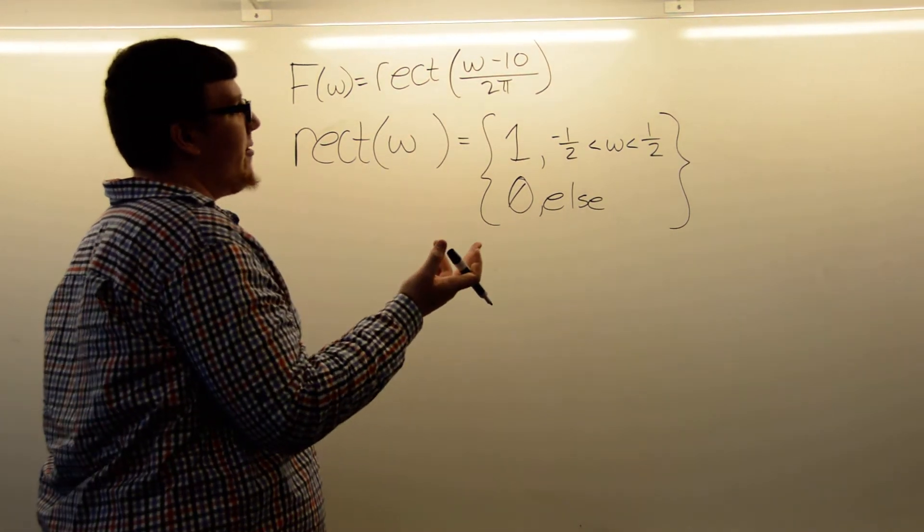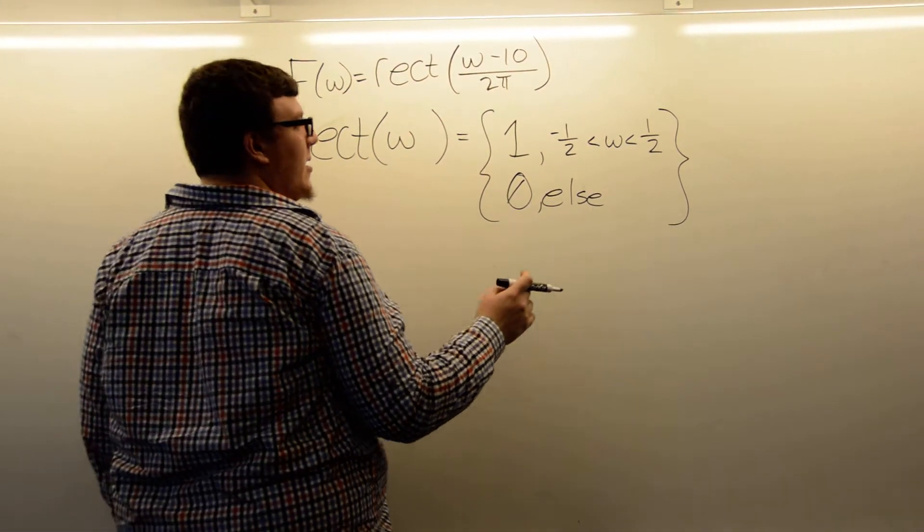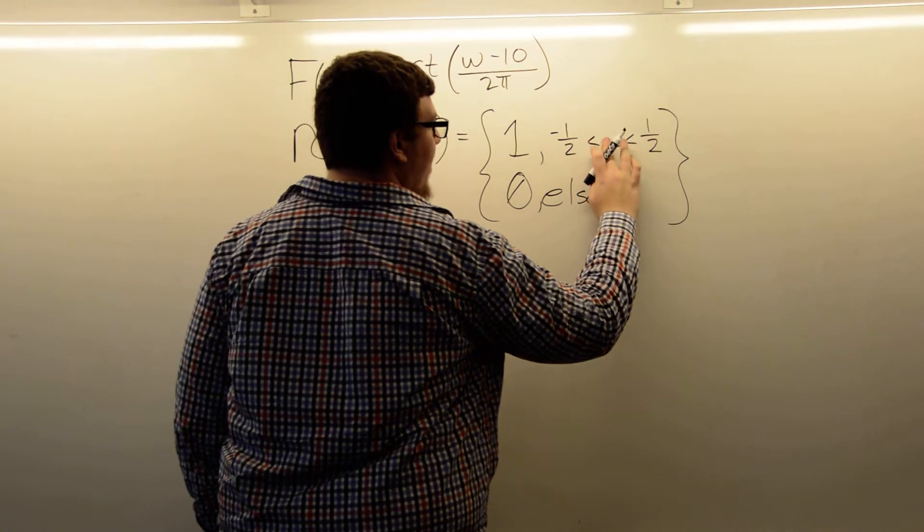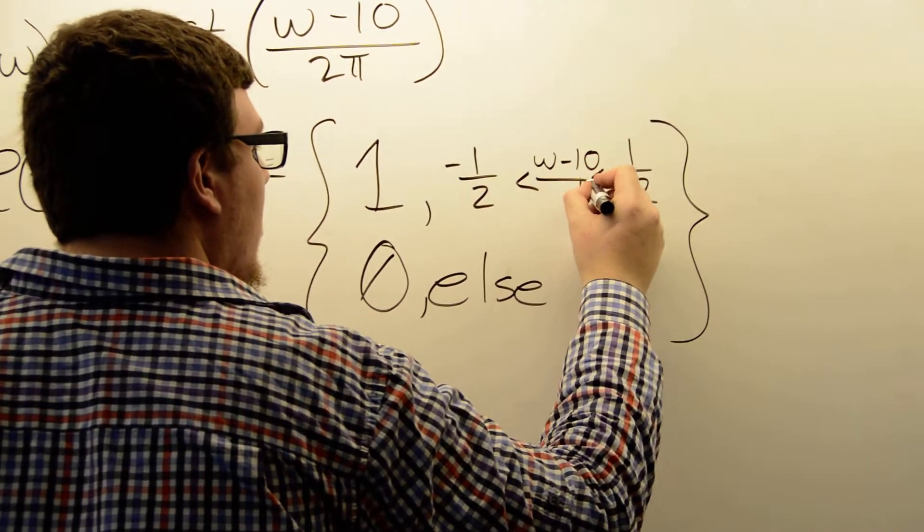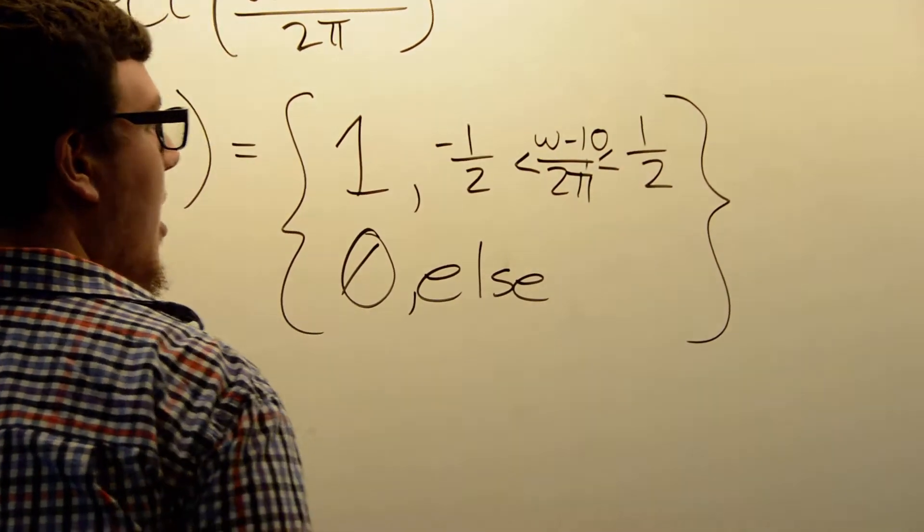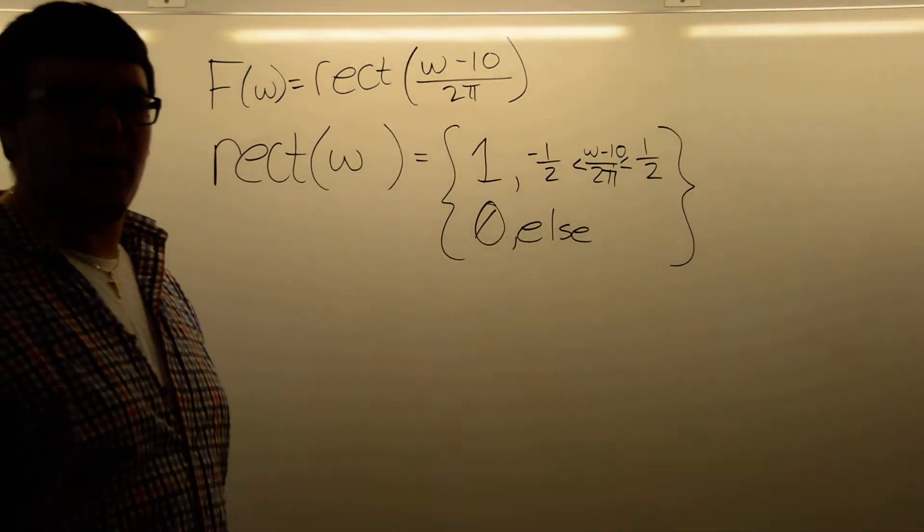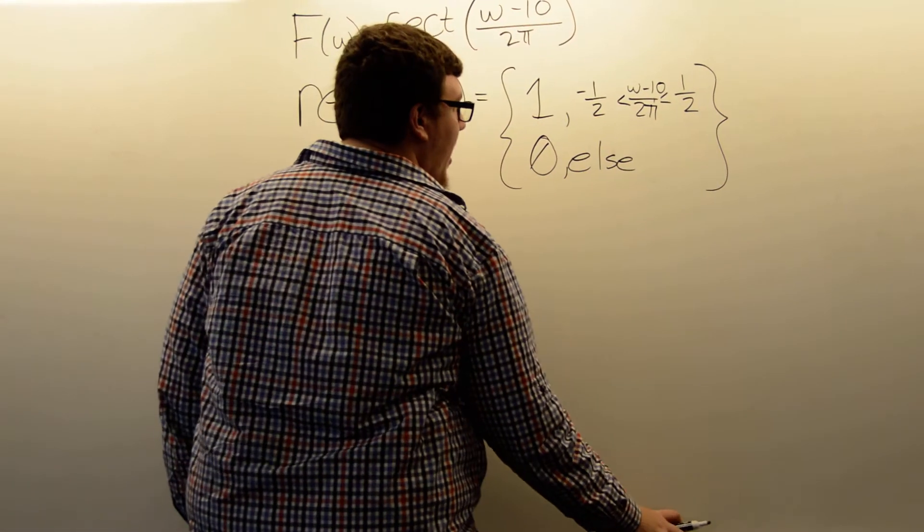Now for this above function where we have ω minus 10 over 2π, we would then just have to replace this ω in the center here with ω minus 10 over 2π. And so to put it back into just being an ω, we multiply by 2π on both sides.